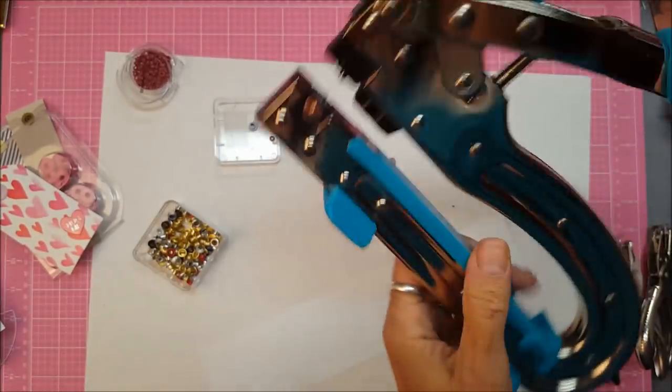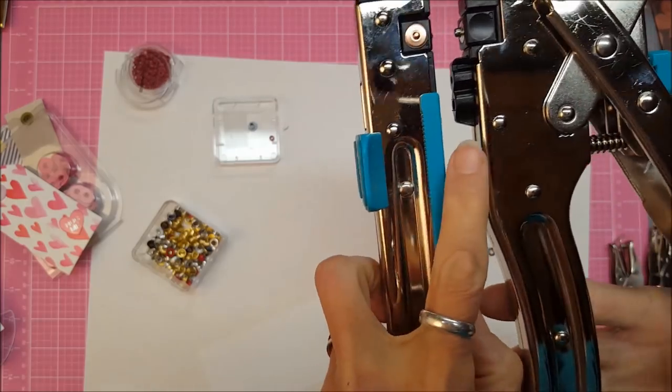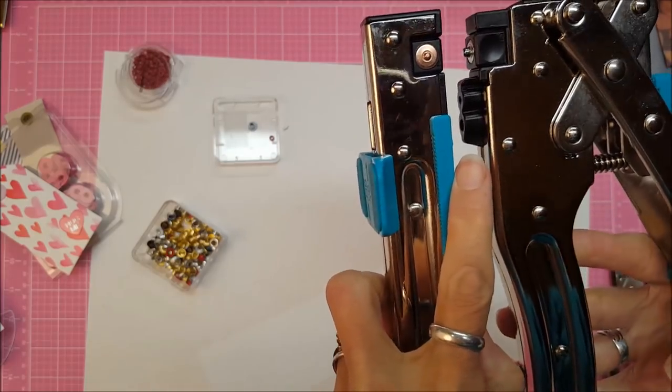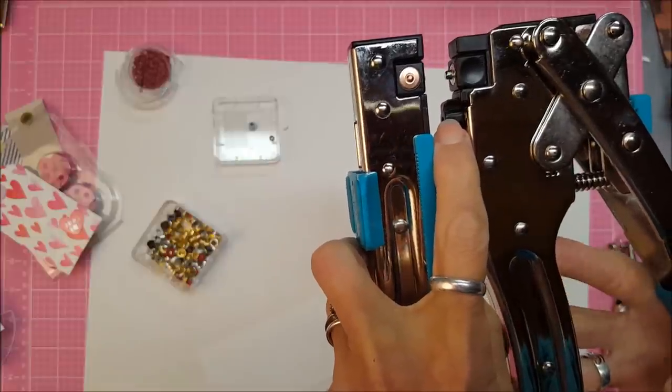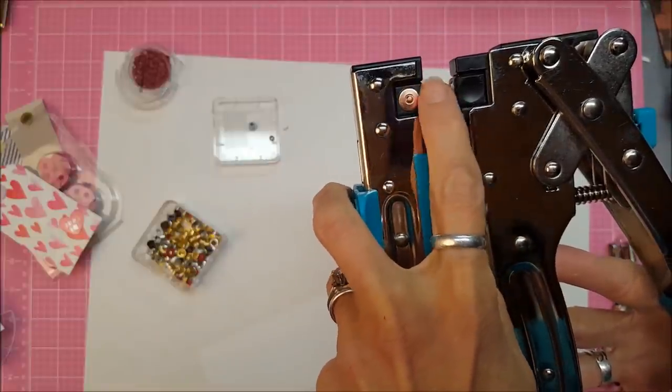We're going to put that on 3/16, and you can see on the bottom the hole punch coming down. When you do the smaller hole punch, it comes out of this hole, and when you set the eyelets you're using this part right here.